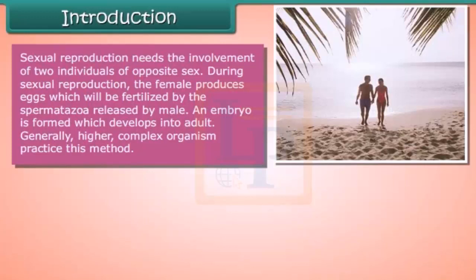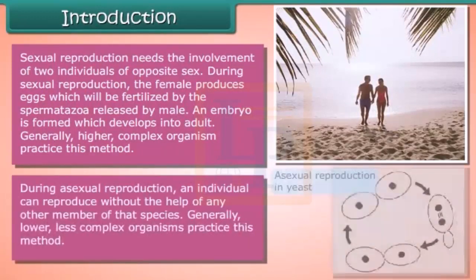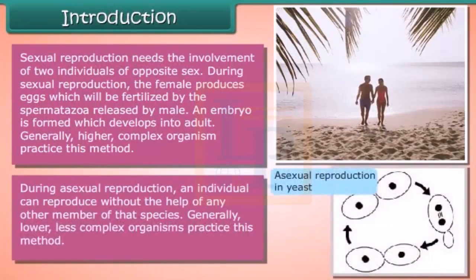During asexual reproduction, an individual can reproduce without the help of any other member of that species. Generally, lower and less complex organisms practice this method.